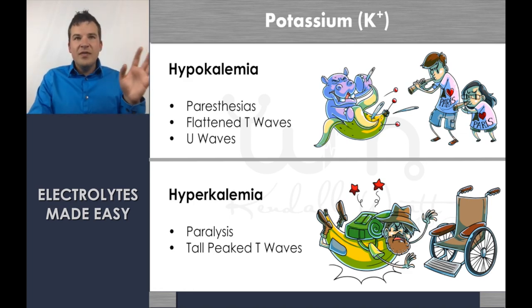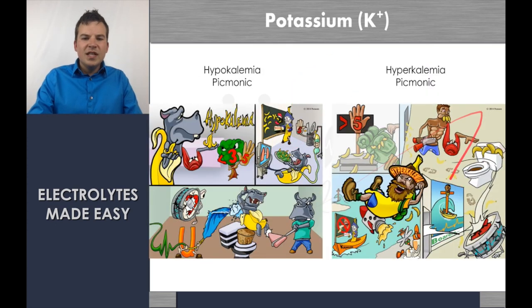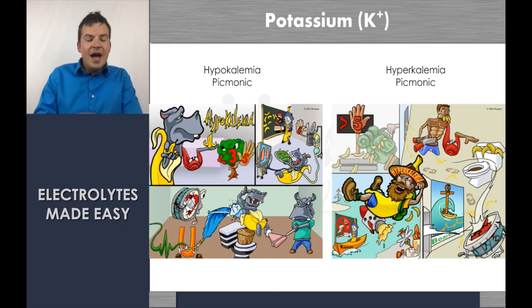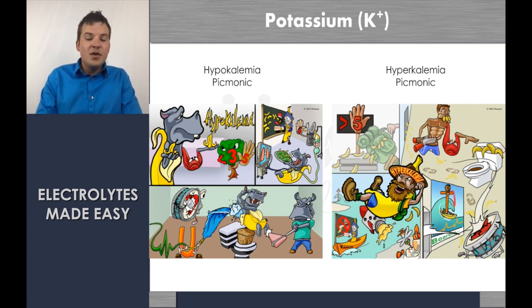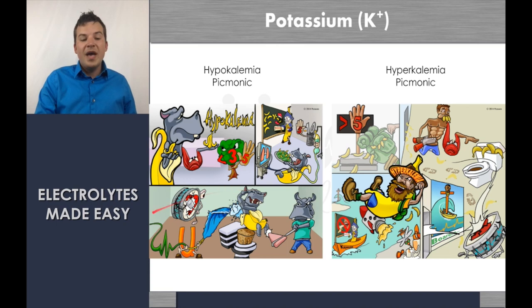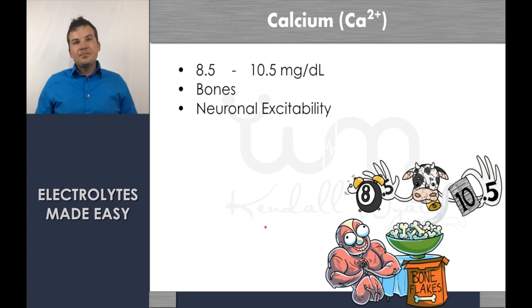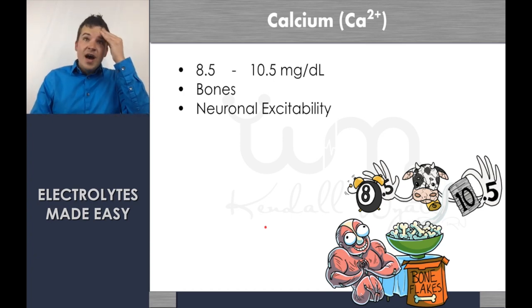With hyperkalemia you see weakness and paralysis-type problems in skeletal muscle, as well as hyperactive diarrhea symptoms. There's a Picmonic character showing a tall peaked T wave to help you remember. With hypokalemia it's the opposite — a flattened T wave and a U wave. The Picmonic also shows constipation with the U wave. These ECG findings are high-yield, and additional ECG videos are available to see how those T waves and changes look in detail.